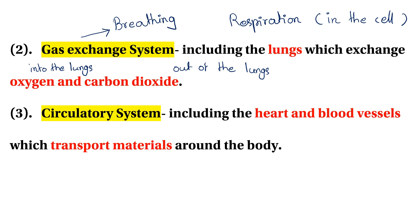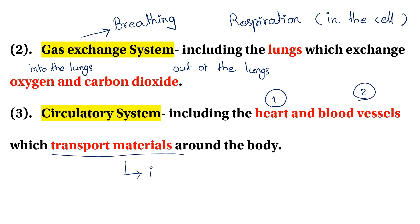The circulatory system includes the heart and blood vessels, which transport materials around the body. Any transport material moves through the plasma.